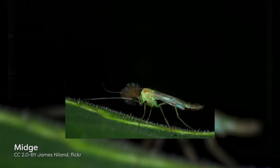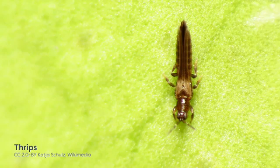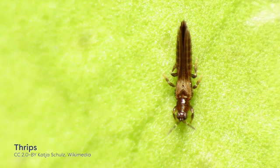Small adult insects can also disperse passively, especially when strong gusts of wind carry them away from their original habitat. If they have wings, they are usually able to make small corrections to their flight paths using active flight. Adults of small insects, such as aphids, thrips, and midges often disperse passively.